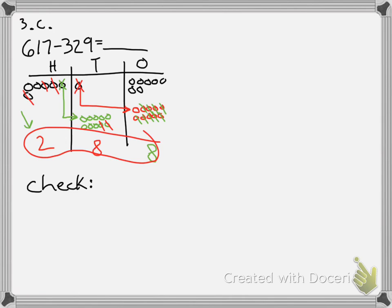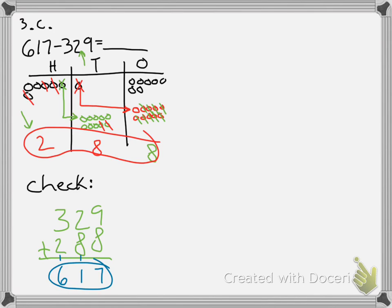To check, I take the bottom two numbers and add them: 329 plus 288 should equal 617. So: 9 plus 8 is 17, 2 plus 8 is 10 plus 1 is 11, 3 plus 2 is 5 plus 1 is 6. I end up with 617 — just like what I started with.